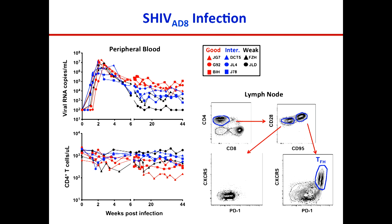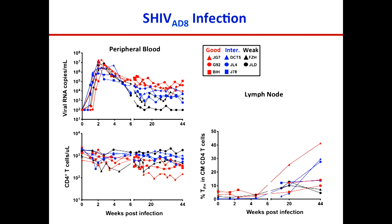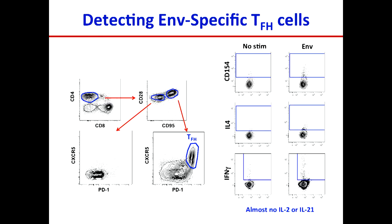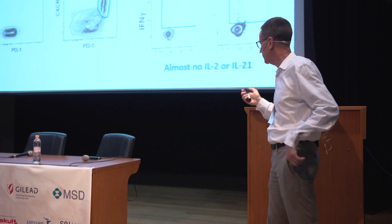By this time, we had better markers for T follicular helper cells in monkeys, so we could look at CXCR5 versus PD1 to identify them. When we looked at T follicular helper cells in lymph nodes over time, the red and blue — good and intermediate neutralizing monkeys — had higher T follicular helper cell numbers, but it didn't correlate all that well. So we knew we had to look at antigen-specific T follicular helper cells, which we could do by stimulating with envelope peptides, then gating on the T follicular helper cell population and asking whether they mobilized CD154 in response to envelope, produced IL-4, or produced interferon gamma.